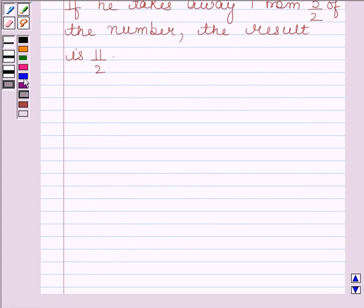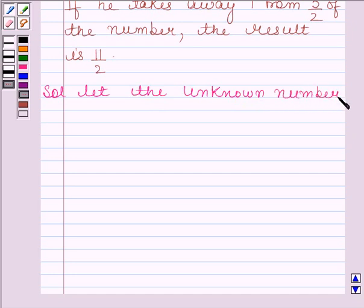Let's now begin with the solution. Let the unknown number be N, which Anwar thinks of. Now, according to the question,